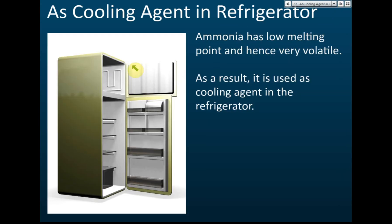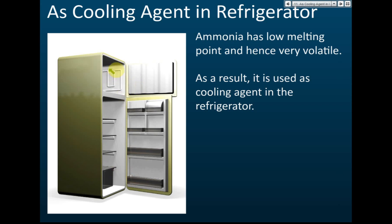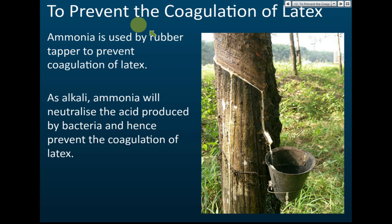Ammonia is also used as a cooling agent in refrigerators. This is because ammonia has a low boiling point and is therefore very volatile — meaning it evaporates easily and quickly. Evaporation absorbs heat, so when ammonia is sprayed and evaporates inside a refrigerator, it absorbs heat and lowers the temperature, making it an effective cooling agent.